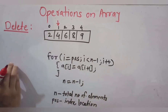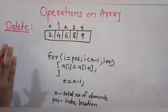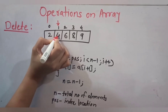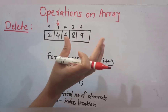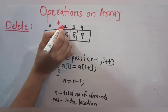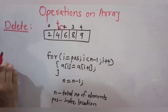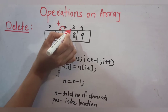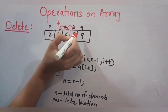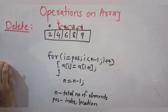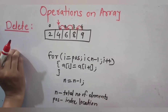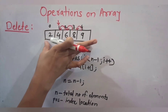If we want to delete 4 from this array, what we have to do is copy the next element into that position. In short, we have to shrink the array. In place of this 4 we copy 6, in place of 6 we copy 8, and in place of 8 we copy 9. So we shift the entire array to the left side, which shrinks the size of the array.